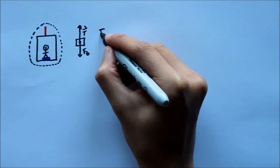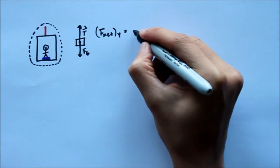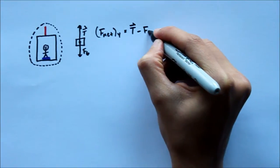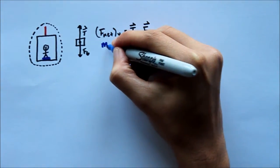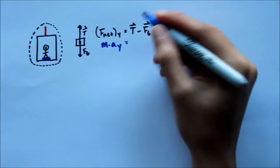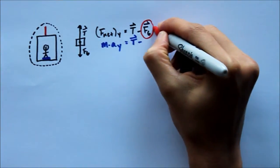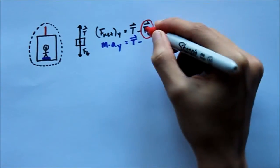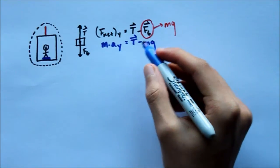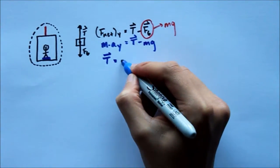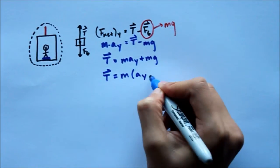So when I write out my F_net, F_net in the y direction is going to equal — tension is positive and gravity is negative — so tension minus force due to gravity. I know my F_net in the y is the same thing as mass times acceleration in the y, equal to tension minus fg. And I know fg, applying Newton's second law, is going to be mg because the acceleration due to gravity is g. So minus mg. If I rearrange this, tension equals m·ay plus mg, which simplifies to T = m(ay + g).